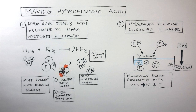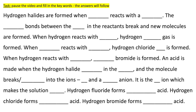Remember, it is the H⁺ ions which make the solution acidic. The more dissociated H⁺ ions there are, the more acidic the solution is. Pause the video here to practise the key words — the answers will follow.